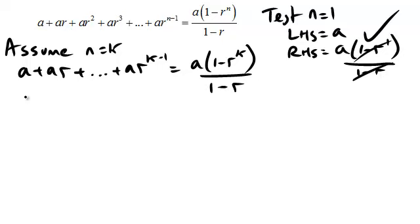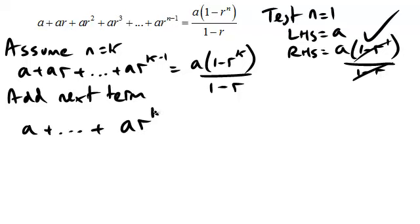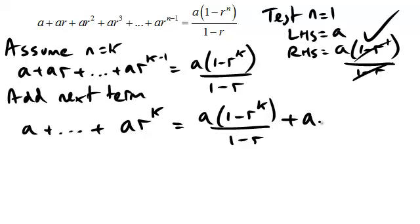So now we add the next term, which is what you do for these sequence types induction proofs. So I'm going to have this left hand side, a plus dot dot dot, and then I'm going to add the next term, which is a r to the k plus 1 minus 1. And I've got to add that to both sides. So I've started with something that I assumed and I've added the same thing to both sides. So it's still correct, assuming the assumption was right, which is obviously a rather big assumption.